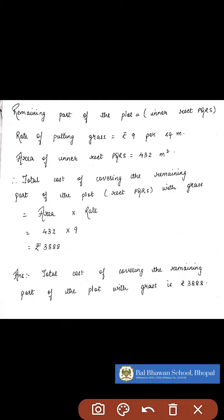Now to continue with the question, they have told us to find out the total cost of covering the remaining part, means the part excluding the road, with grass. So the remaining part which is not including the road is the inner rectangle, i.e. rectangle PQRS. And the rate of putting grass on it is Rs. 9 per square meter.